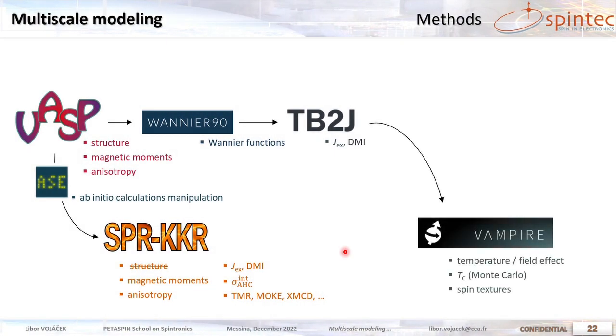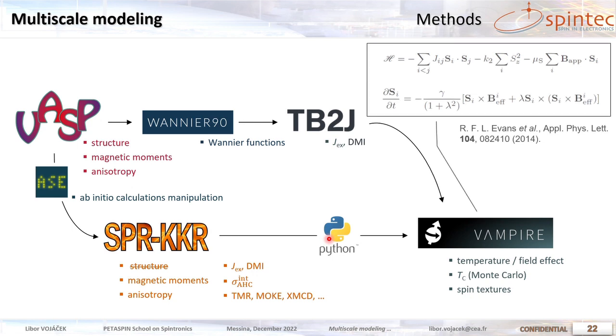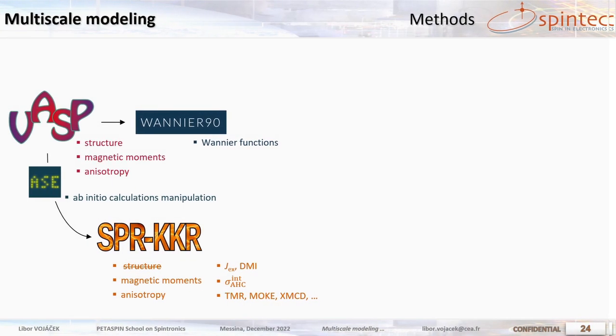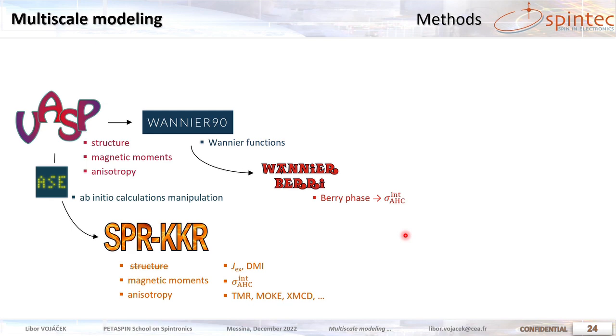So we also take these exchange coefficients and we perform Monte Carlo simulations with the Vampire package which can give you temperature and field effects. Also spin textures in real space. And we also wrote an interface to Vampire from SPRKKR. So Vampire is based on the Heisenberg model including the exchanges, anisotropy, magnetic field. It can also do LLG. And if we do this we construct films of different thicknesses. We see that Curie temperature is really lower. It approaches the experiment and it's very strongly dependent on the thickness.